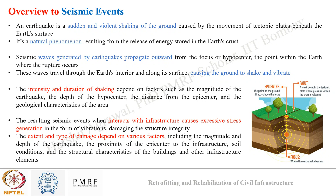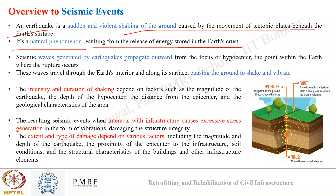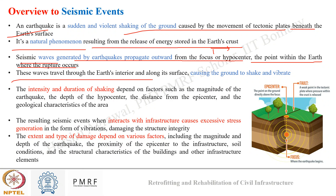One more major category of distress — often unpredictable yet very severe — is damage due to natural calamities, among which the most critical is earthquake-induced damage. Before moving into retrofitting and precautionary measures, let's look at an overview of how earthquakes induce damage. An earthquake is a sudden and violent shaking of ground caused by the movement of tectonic plates beneath the earth's surface, a natural phenomenon resulting from the release of energy stored within the earth's crust. The event generates seismic waves which propagate outward from the focus or hypocenter through the earth's interior and along its surface, causing the ground to shake and vibrate.